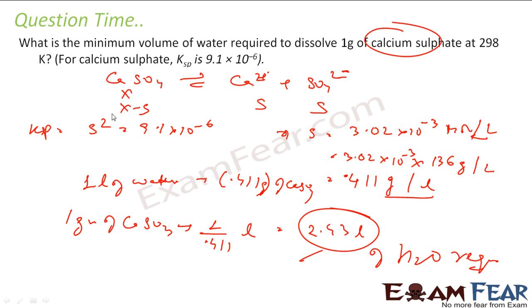See, you just found the value of s and s came out to be this moles per liter. So we convert this into grams per liter. That means 0.411 grams per liter of calcium sulphate can be dissolved. That means 1 liter of water will dissolve 0.411 grams. So 1 gram of CaSO4 will need 2.43 liters of water.